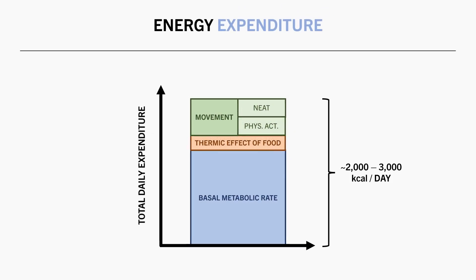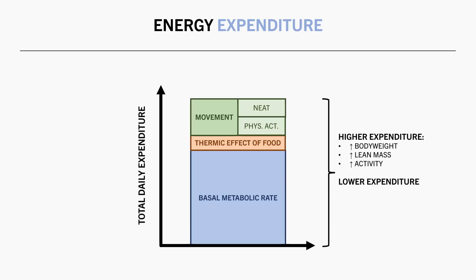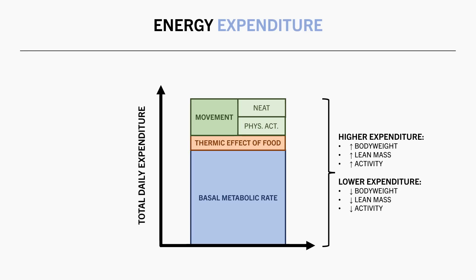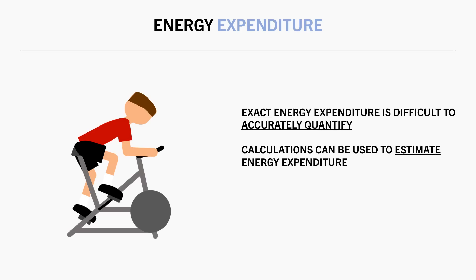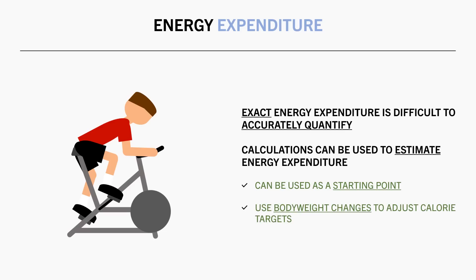For most people, we would typically expend somewhere around 2,000 to 3,000 calories per day. Heavier individuals carrying more lean mass who are highly active will typically expend more energy than lighter, leaner, and less active individuals. So your exact energy expenditure per day is very difficult to accurately quantify, and your energy expenditure likely changes slightly from day to day. There are calculations you can use to estimate your total daily energy expenditure, which can be useful as a starting point. However, they can often be up to several hundred calories off, so we need to adjust our targets based on our body weight changes.